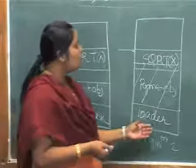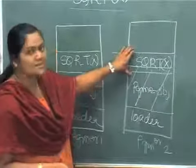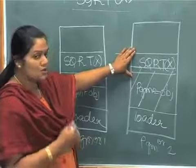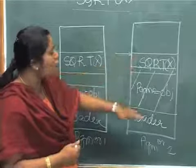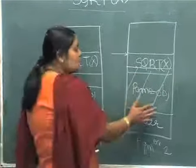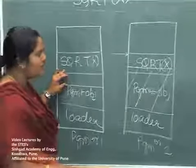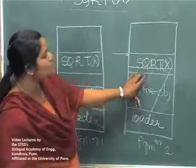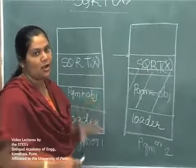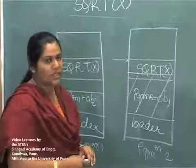What system programmers felt was that the loader should not only do the job of loading the program but also relocate the subroutine — that is, place the object code of the subroutine following the object code of the program. This would avoid situations where there is no proper utilization of memory space or where the object code overwrites parts of subroutines. Loaders which perform this job are called relocating loaders.